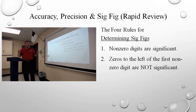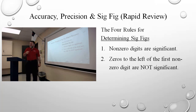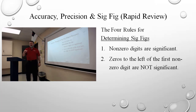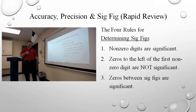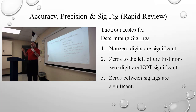Second, zeros to the left of the first non-zero digit are not significant. So any leading zeros before your first one, two, three, four, five and so on — any leading zeros are not significant, so you can go through and just cross those out. They will not be significant. Then third, the zeros between anything that you've already determined are significant figures is significant.